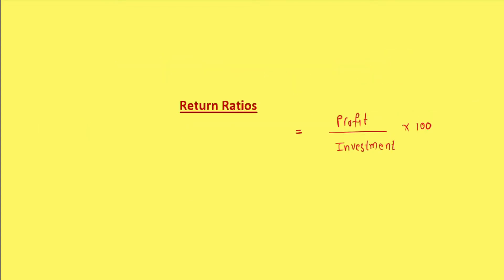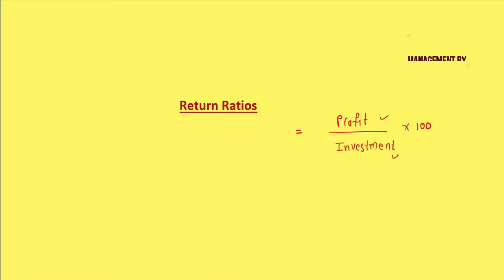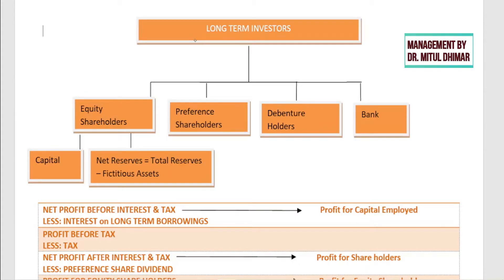Now let's talk about return ratios. These ratios show the percentage of profit we are generating for our investors. The basic formula is profit divided by investment into 100. Here we talk about long-term investors only, because short-term investors generally deal with liquidity ratios. Long-term investors include equity shareholders, preference shareholders, debenture holders, and banks providing long-term borrowings.